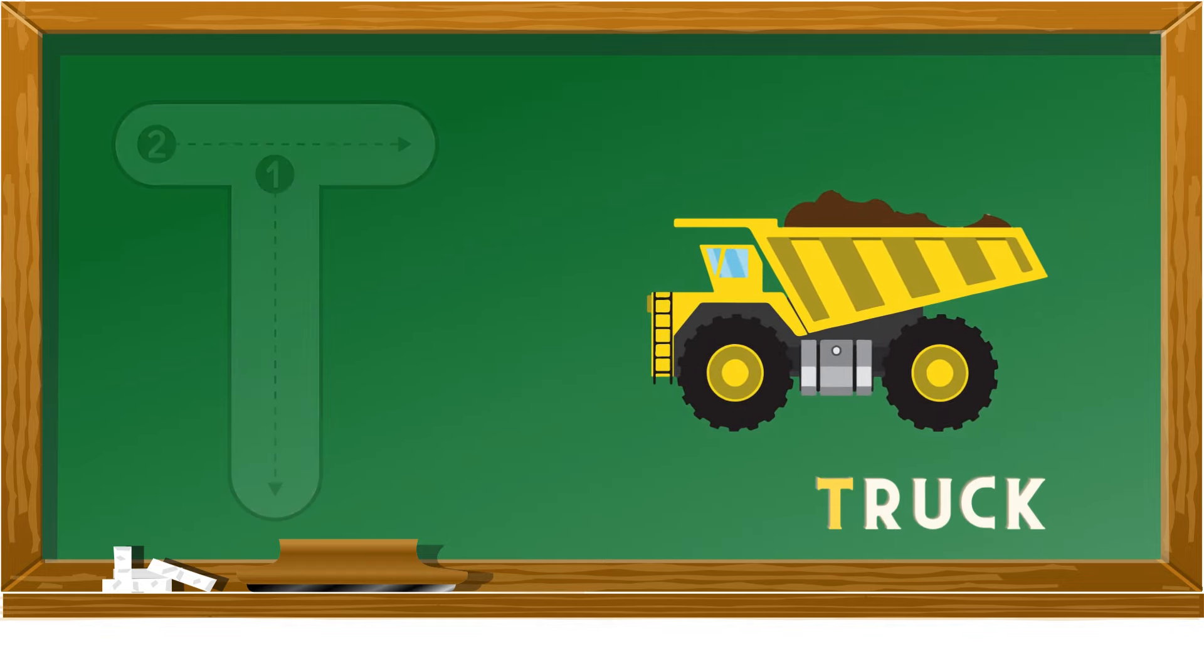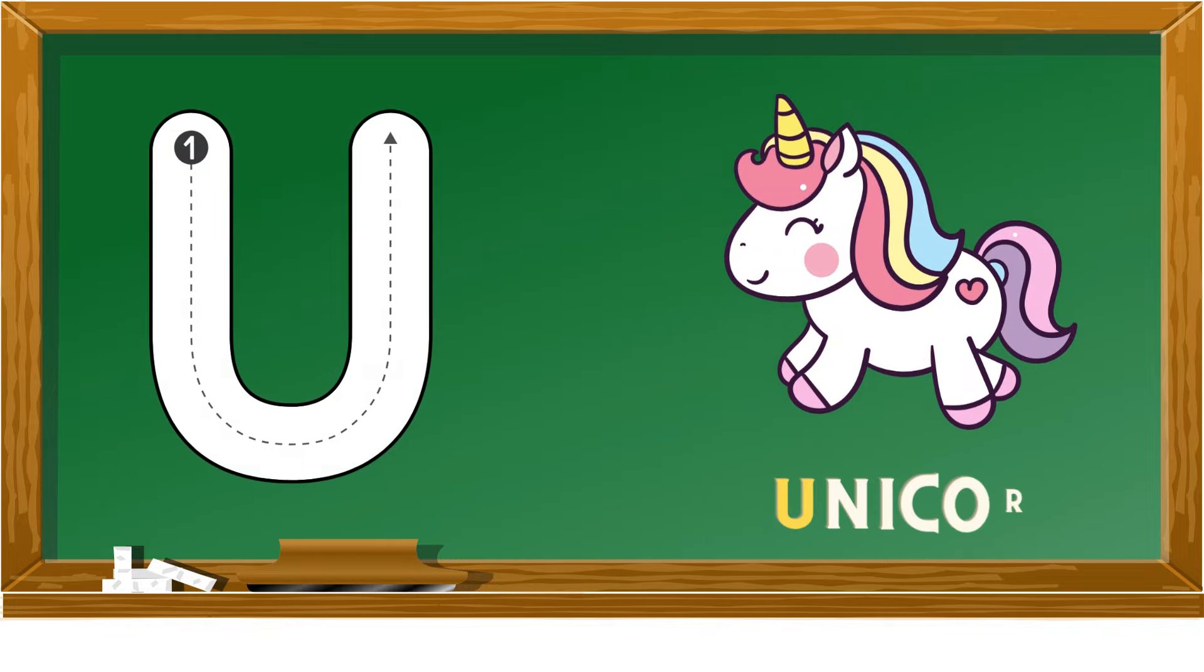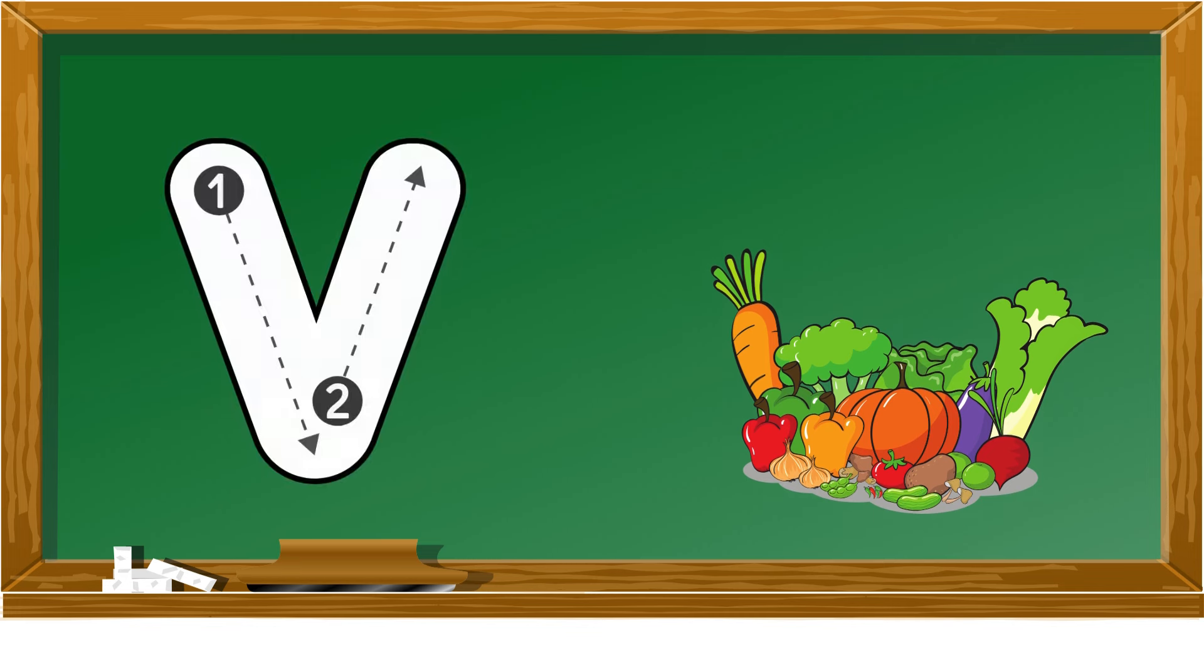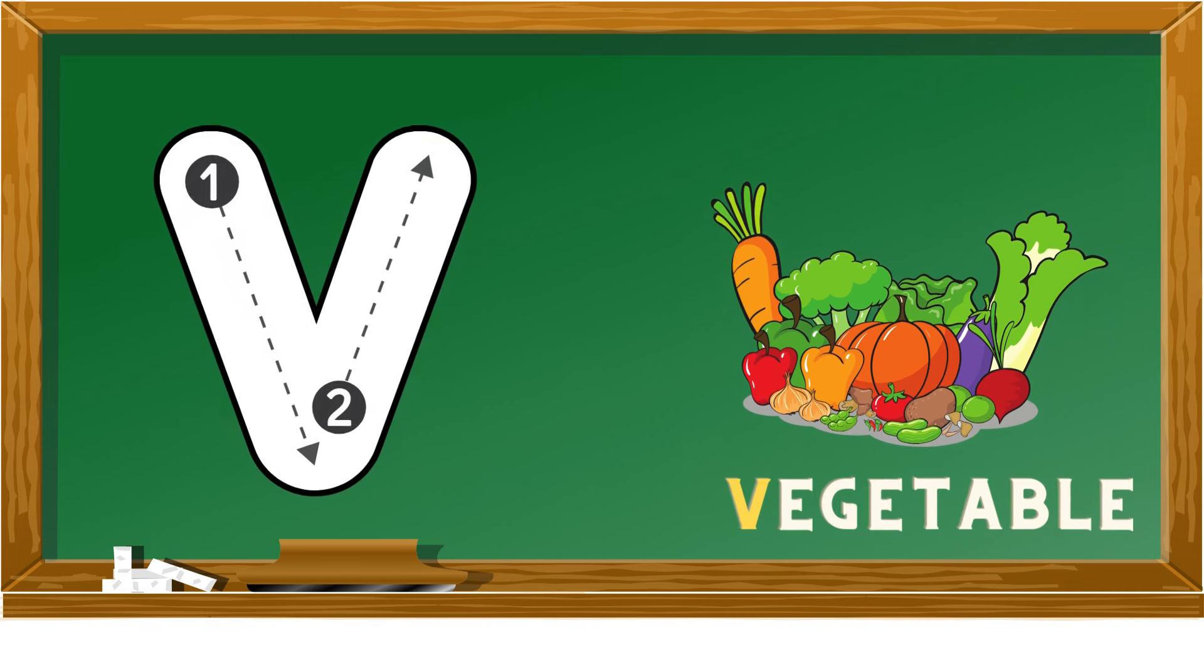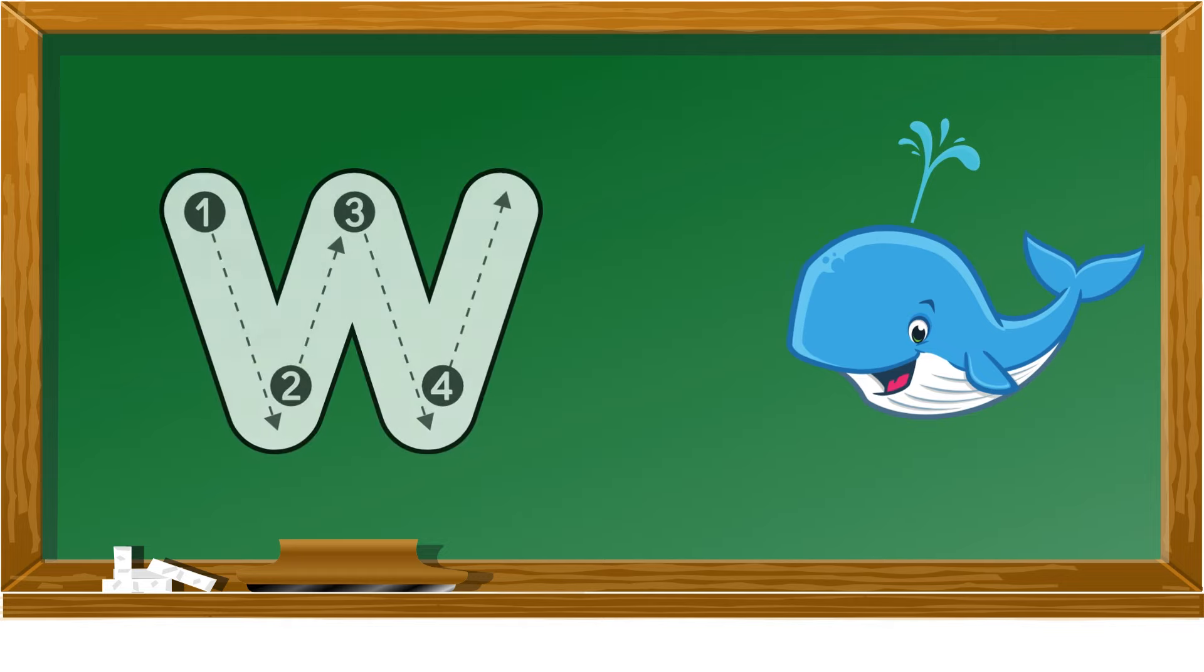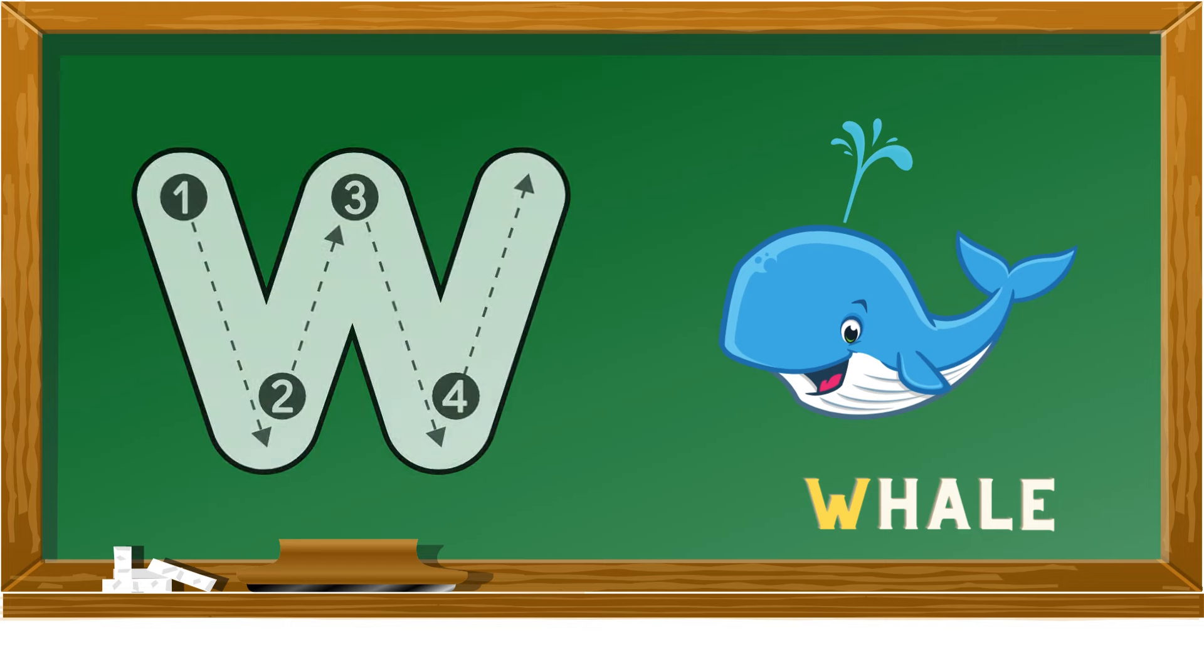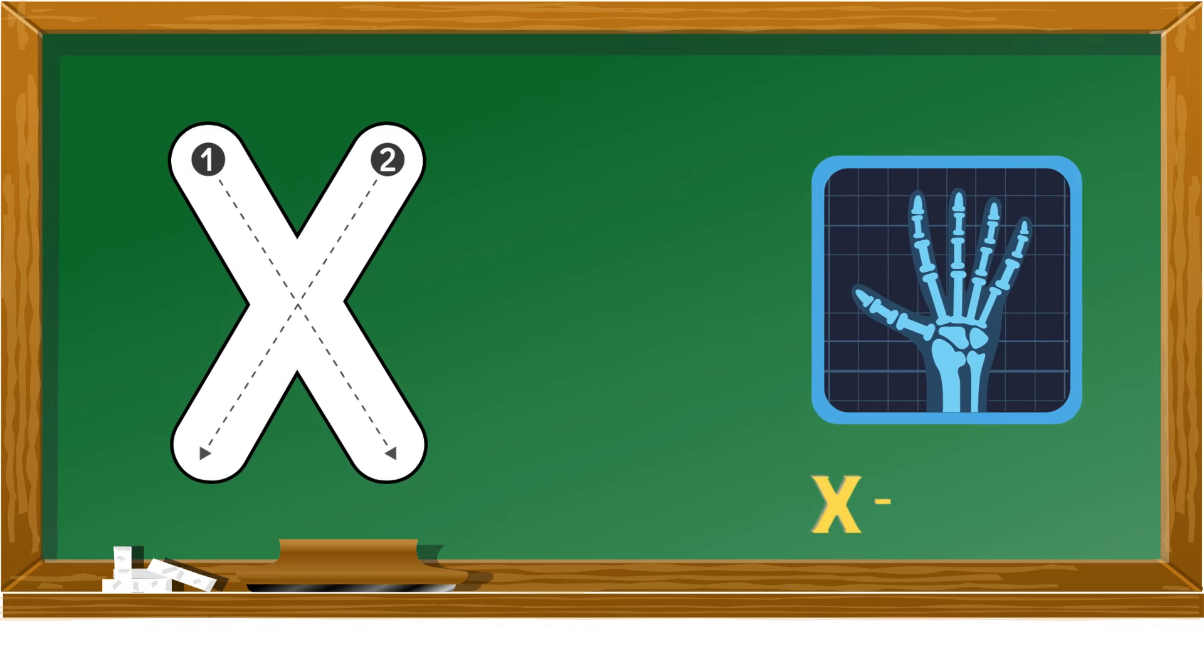U is for unicorn, V is for vegetable, W is for whale, X is for x-ray.